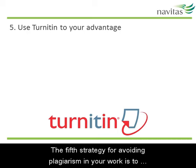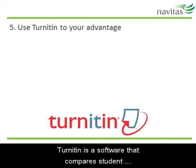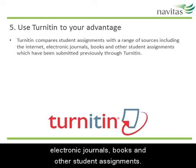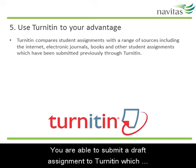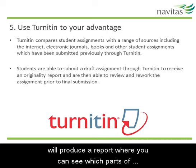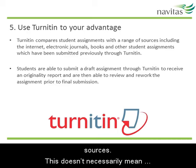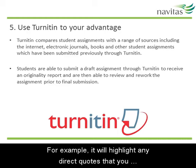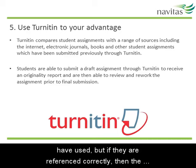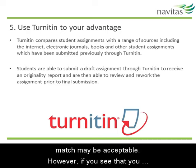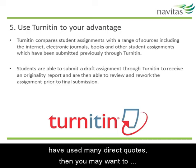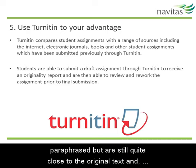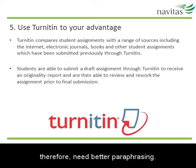The fifth strategy for avoiding plagiarism in your work is to use Turnitin to your advantage. Turnitin is a software that compares student assignments with other sources including the internet, electronic journals, books and other student assignments. You are able to submit a draft assignment to Turnitin which will produce a report where you can see which parts of your assignment have come up as a match to other sources. This doesn't necessarily mean that those parts of the text have been plagiarised — for example, it will highlight any direct quotes that you have used, but if they are referenced correctly then the match may be acceptable. However, if you see that you have used many direct quotes then you may want to consider paraphrasing some of them. The report will also indicate any areas that you have paraphrased but are still quite close to the original text and therefore need better paraphrasing.